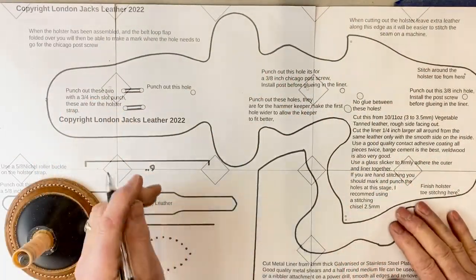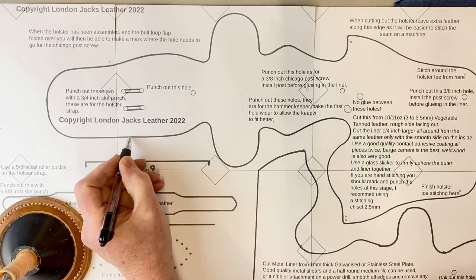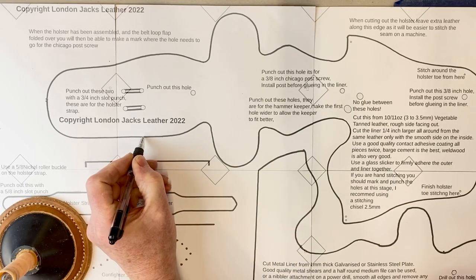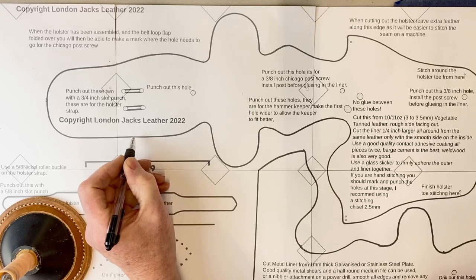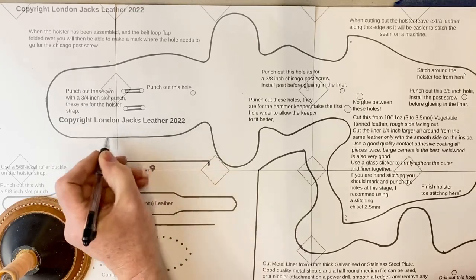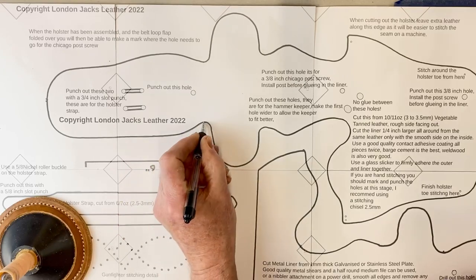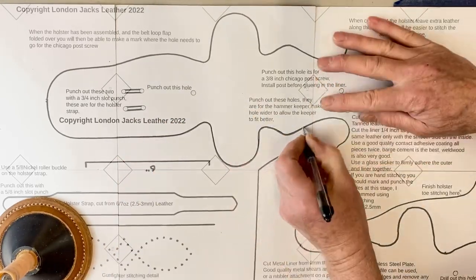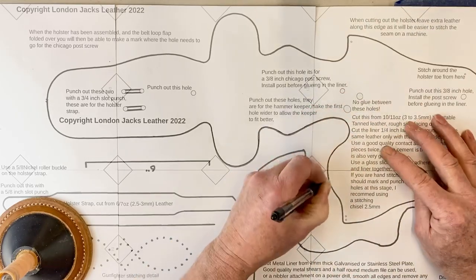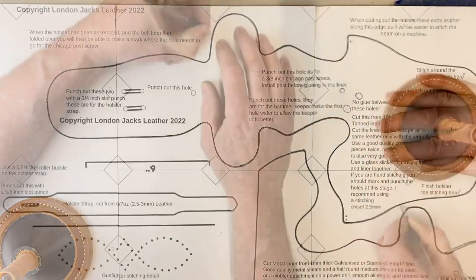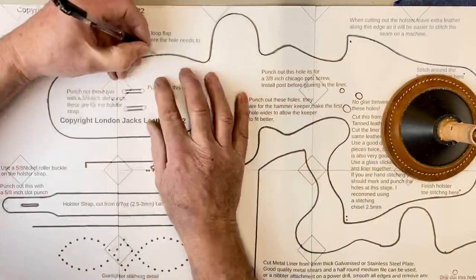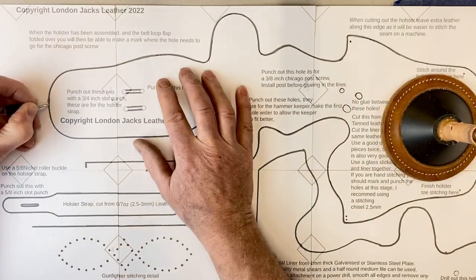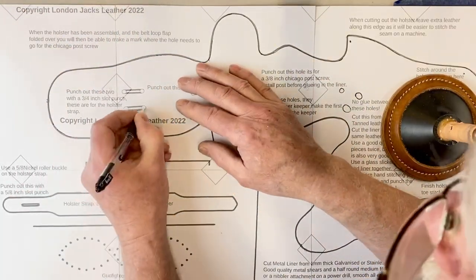I recommend using a ballpoint pen. You're going to want to trace on the inside line just to be nice and accurate. It really is very important to follow the inside of the line when you're tracing out the pattern. I've used my original card templates to create these patterns, so by following the inside line you're going to have an exact copy of the patterns that I use.